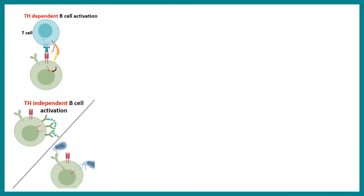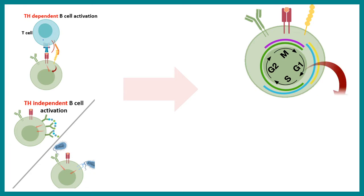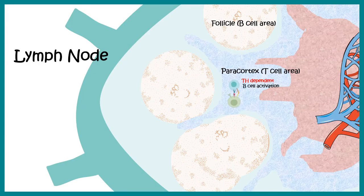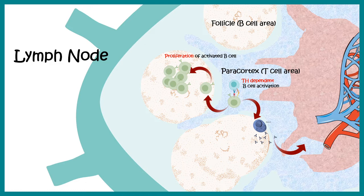Regardless of how B cells are activated, they eventually enter the cell cycle and proliferate. For example, when a follicular T helper cell activates a B cell, that B cell can immediately generate short-lived plasma cells and secrete IgM into the bloodstream — a relatively quick effector response. For a longer-term response, B cells proliferate in the follicles and differentiate into long-lived antibody-secreting plasma cells that can persist for several weeks to months.